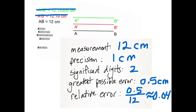Relative error, we're taking our greatest possible error, right there, and then taking our measurement up here, 12, and then we just divide 0.5 by 12, and we get approximately 0.04.